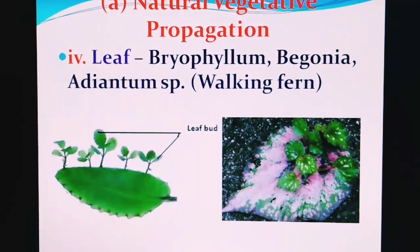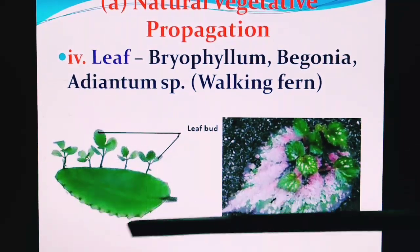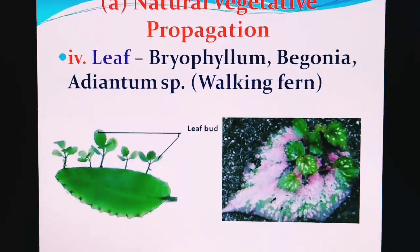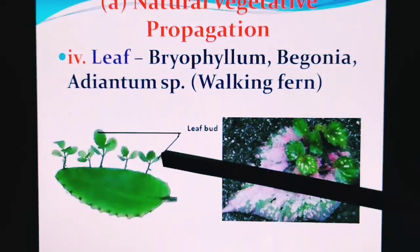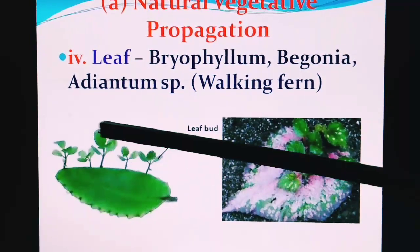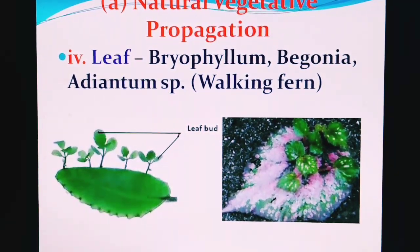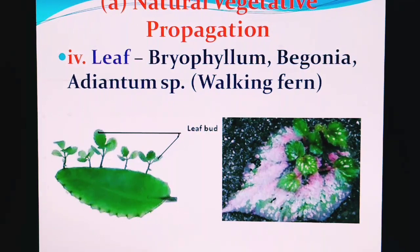The leaf part can also be used by a plant to create a new individual. The best example is Bryophyllum. On the margin of Bryophyllum, buds — called leafy buds — are found. When these leafy buds come in contact with the soil, they ultimately create a new plant, as you can see on screen. This is the way the plant produces a new generation on its own, making it natural vegetative propagation. Other examples are Begonia and Adiantum. Adiantum is a pteridophyte, commonly known as the walking fern.